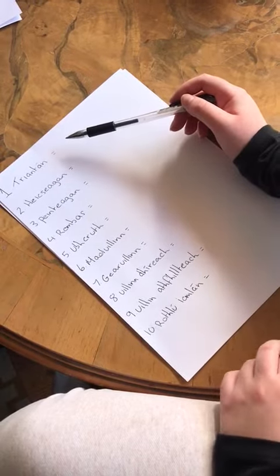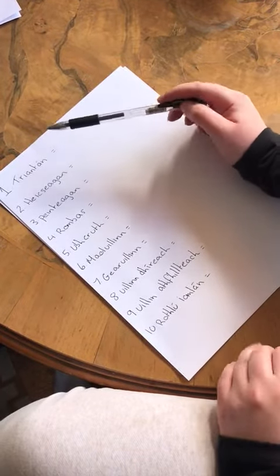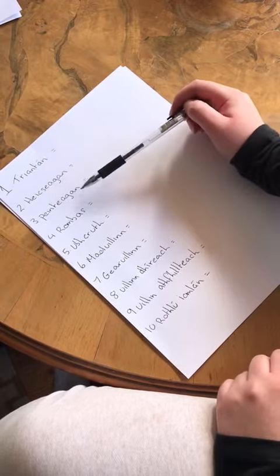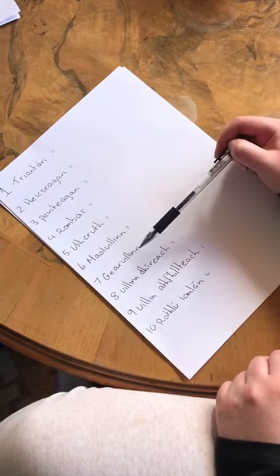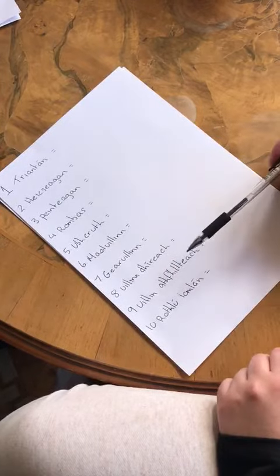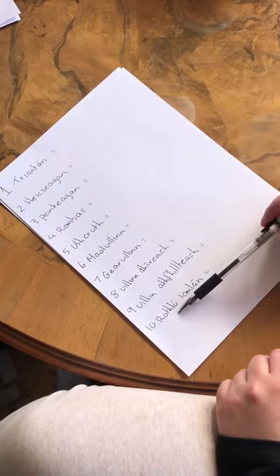So today we are going to be drawing shapes and angles as well, starting with a Trimton, a Hexagon, a Pentagon, Rumbos, Oathcoa, Muilin, Geirillam, Ilan Deirach, Ilan A Iltach, and Rotelieu Umlan.